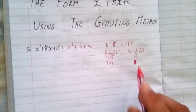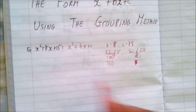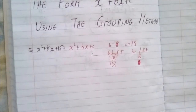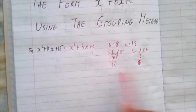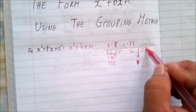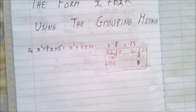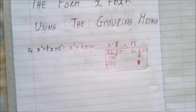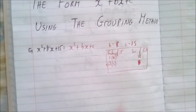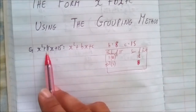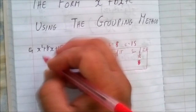So we got 8 as the middle term by noticing that 3 plus 5 equals 8 and 3 times 5 equals 15. We take the second row of the table, which contains the correct pair of integers 3 and 5, whose product is the key number 15 and whose sum is b equals 8. Express the middle term 8x as 3x plus 5x.